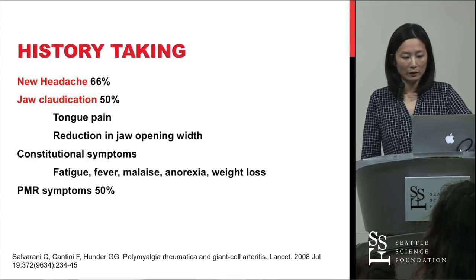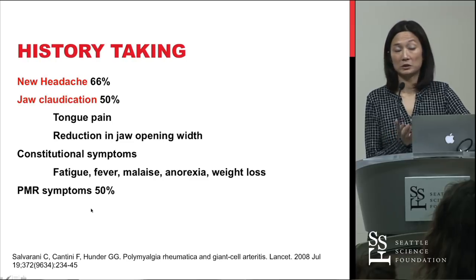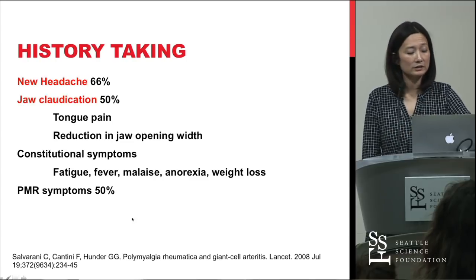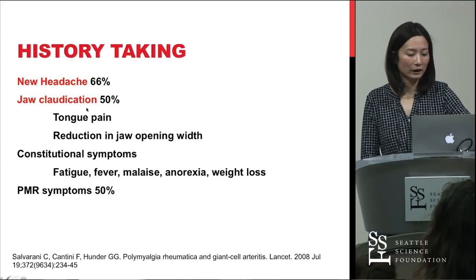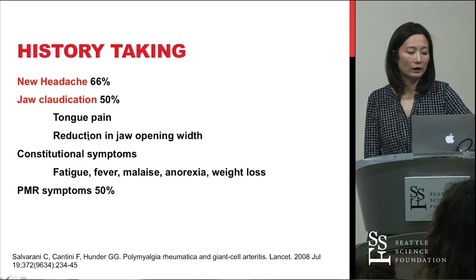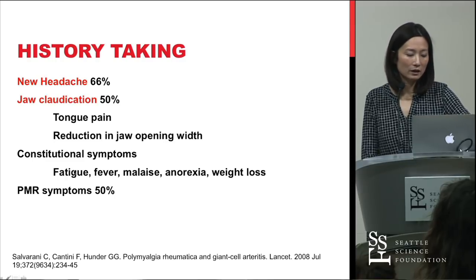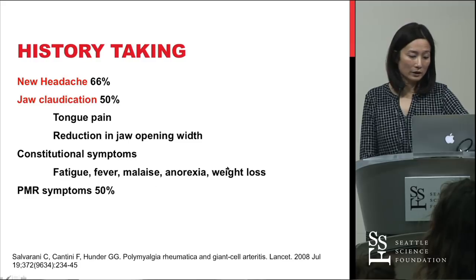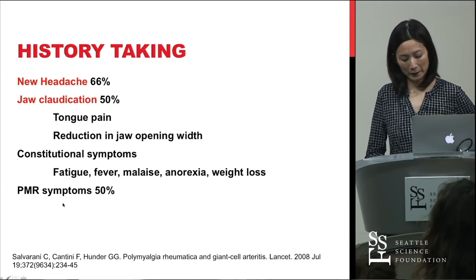The theory is that a virus or unidentified antigen triggers inflammation of the arterial wall. Dendritic cells in the tunica adventitia are triggered by an antigen, multiply, and use cytokines to call upon other inflammatory cells. Their arrival causes hyperplasia of the vascular smooth muscle cells, ultimately causing occlusion of the intima. Common symptoms arising from vessel occlusion include new headache, jaw claudication, tongue pain from ischemia, and constitutional symptoms such as fatigue, fever, malaise, and weight loss. PMR symptoms occur in about 50% of cases.